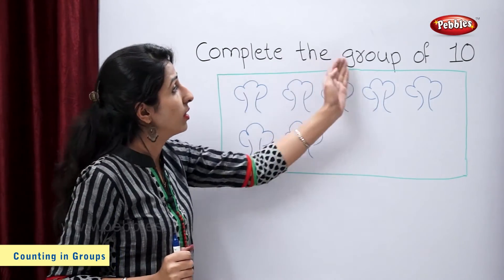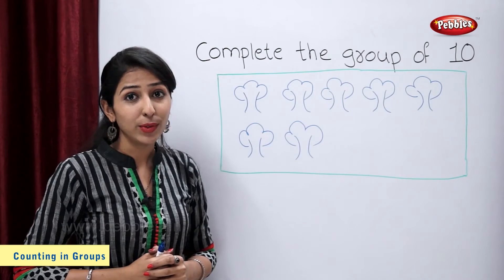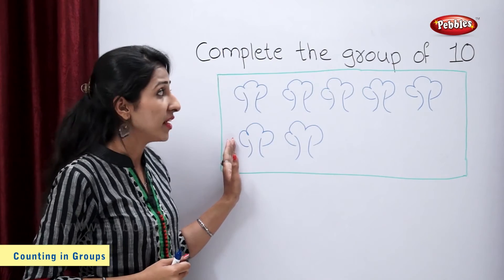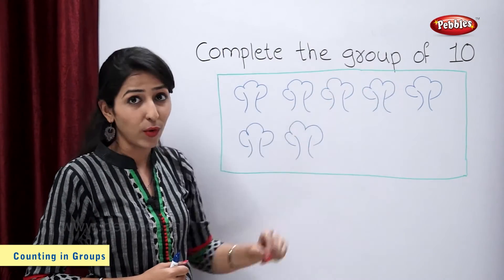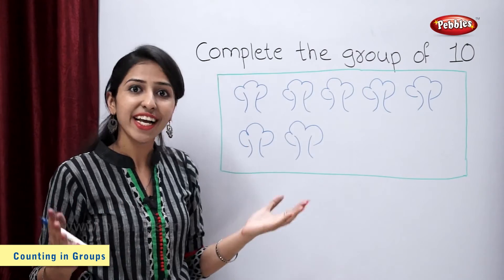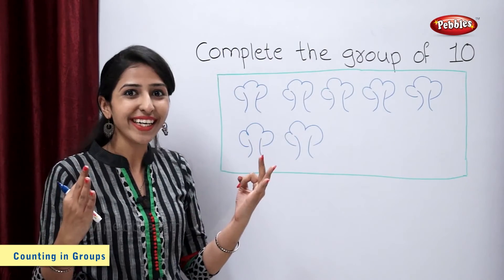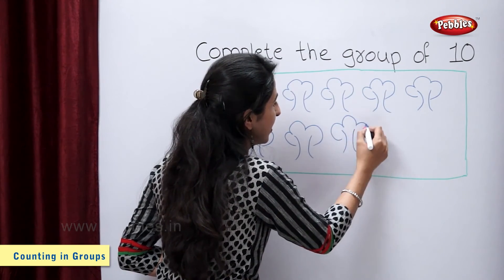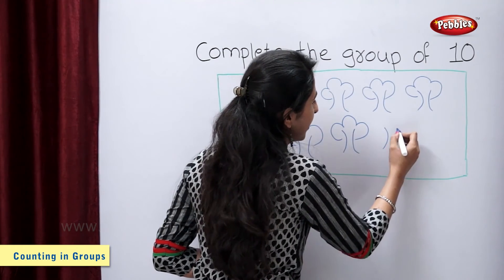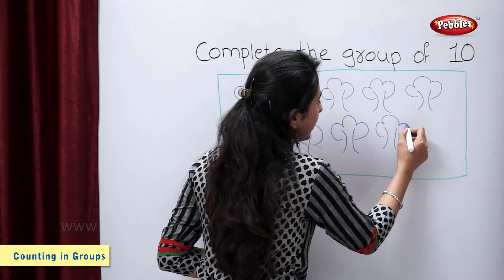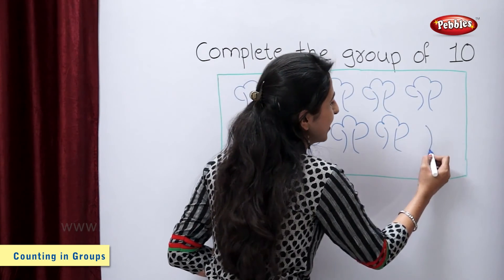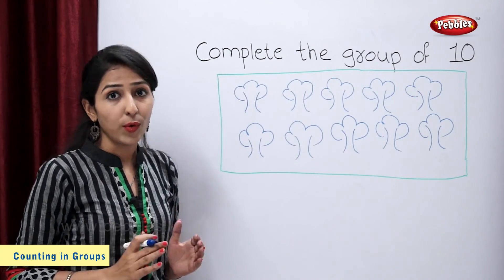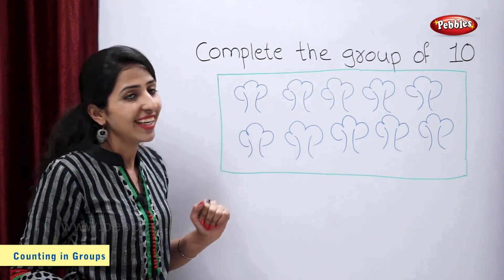And we have to complete the group of 10. So tell me students, how many more trees are required? We have to complete the group of 10, so 3 more trees are required. So let's draw 3 more trees: 1, 2 and 3. So our group of 10 is complete. 3 more trees are required.